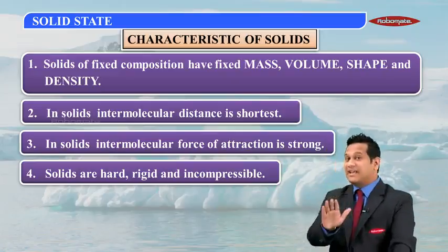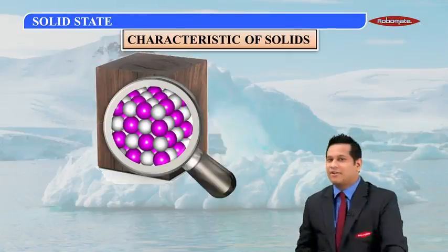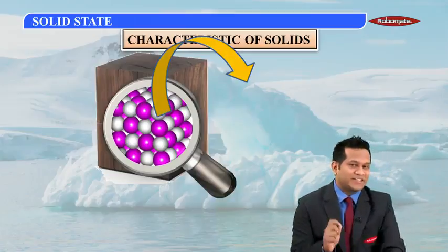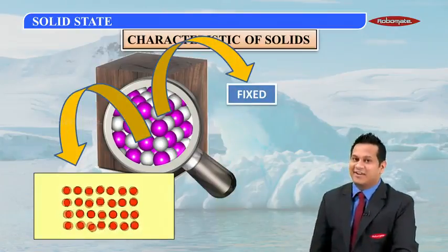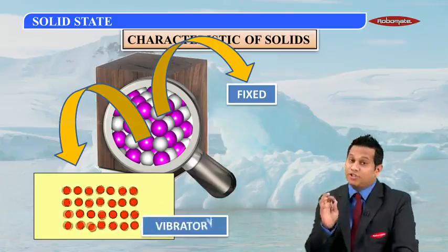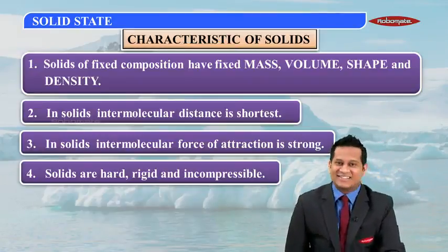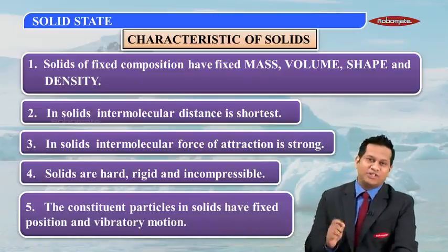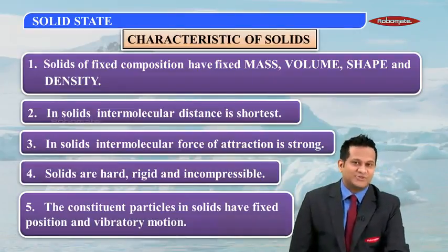The last characteristic of solids talks about position and motion. Looking at this arrangement, the particles have a fixed position, and the motion of the particles is vibratory — they are in an oscillatory motion. So the position is fixed and the motion is vibratory. Therefore, the constituent particles in solids have fixed position and vibratory motion. That's all for this particular module, thank you so much.